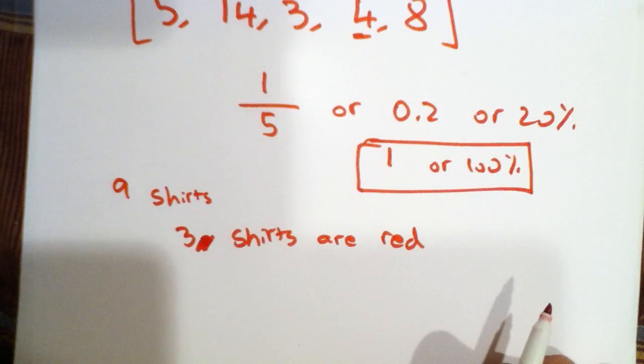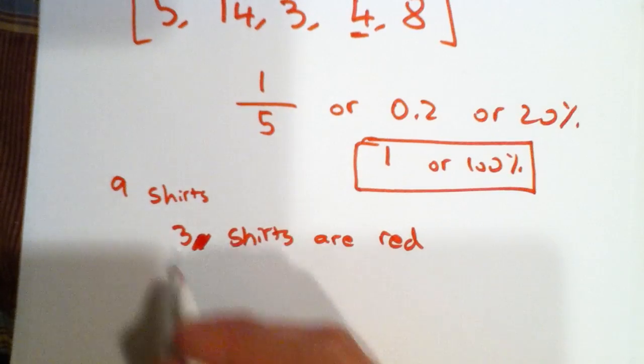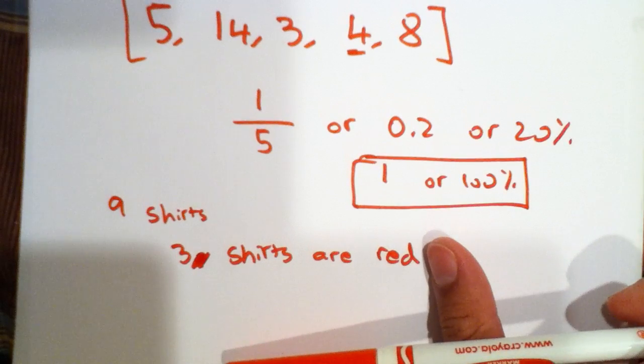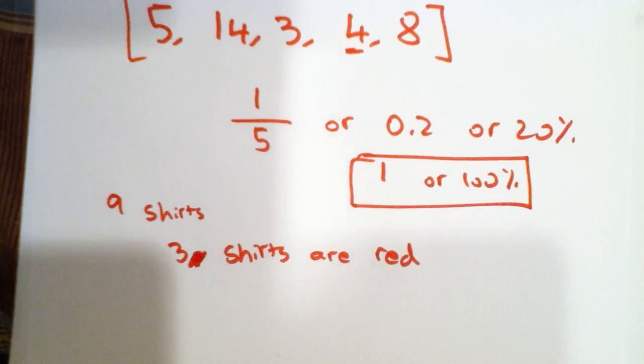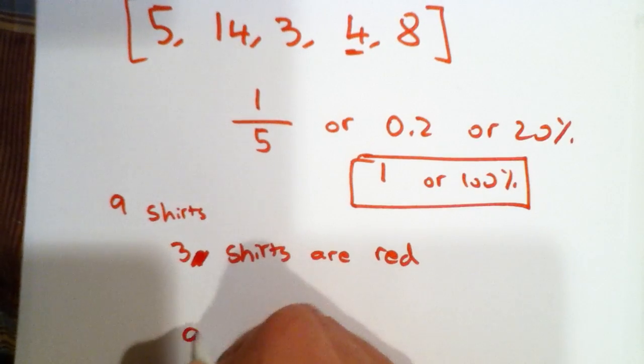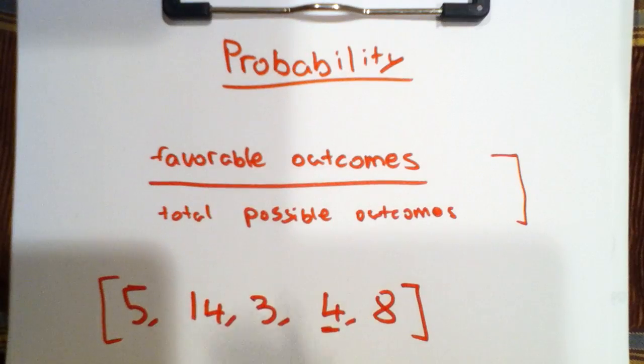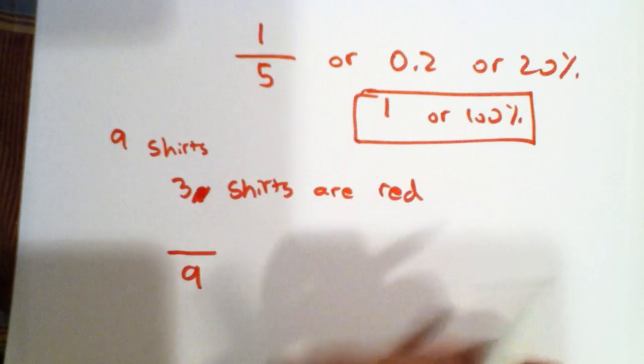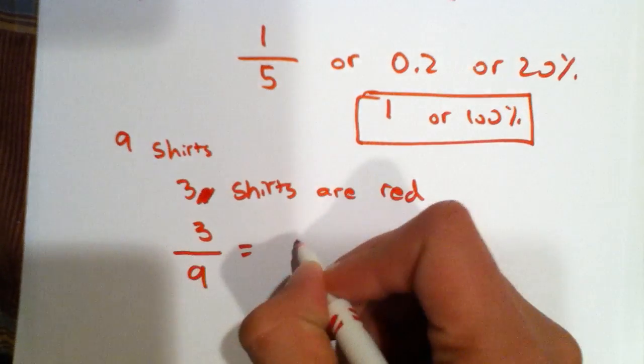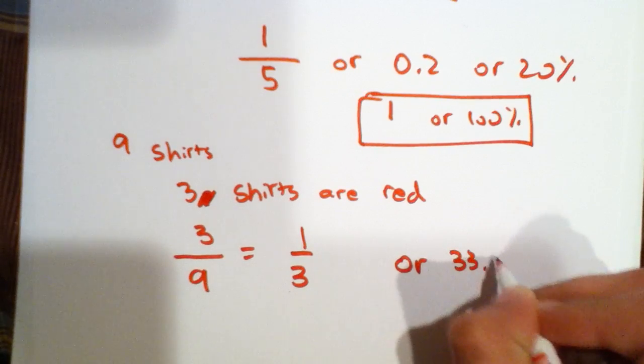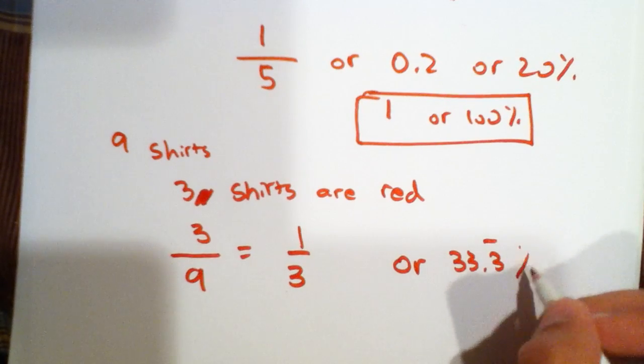So what is the probability that we'll be picking a red shirt? If we were to pick any shirt, the total number of outcomes or possible shirts that we can pick is 9, and we only want 3. That's the favorable outcome. So 3 out of 9, we're just going to simplify to 1 third or 33.3 repeating percent.